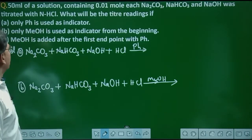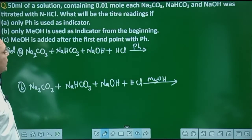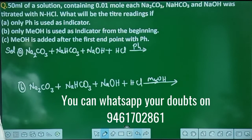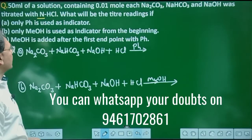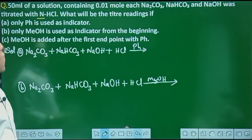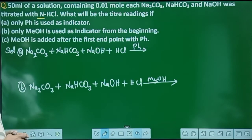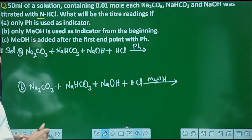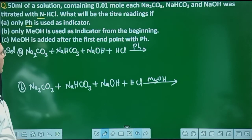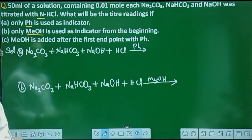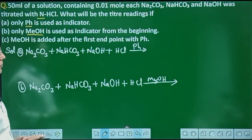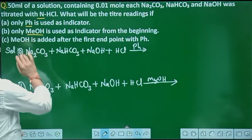Our question is: 50 mL of a solution containing 0.01 mol each of Na₂CO₃, NaHCO₃, and NaOH was titrated with 1N HCl (normality 1). What will be the titration reading? Three options are given. Only phenolphthalein is used as indicator; only methyl orange is used as indicator from the beginning; methyl orange is added after the first endpoint with phenolphthalein. We will solve all three options one by one.